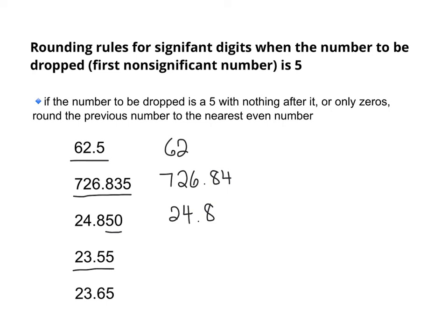24.850 — the previous number is already even, so we leave it alone. 23.55 — if we are rounding to the tenths position, the first decimal place, the answer would be 23.6, and the closest even number to 5 is 6. Similarly, 23.65 rounded to the tenths gives 23.6, because the nearest even number is 6. So if you have 5s with zeros or nothing after it as the first number to be dropped, these new rules apply.